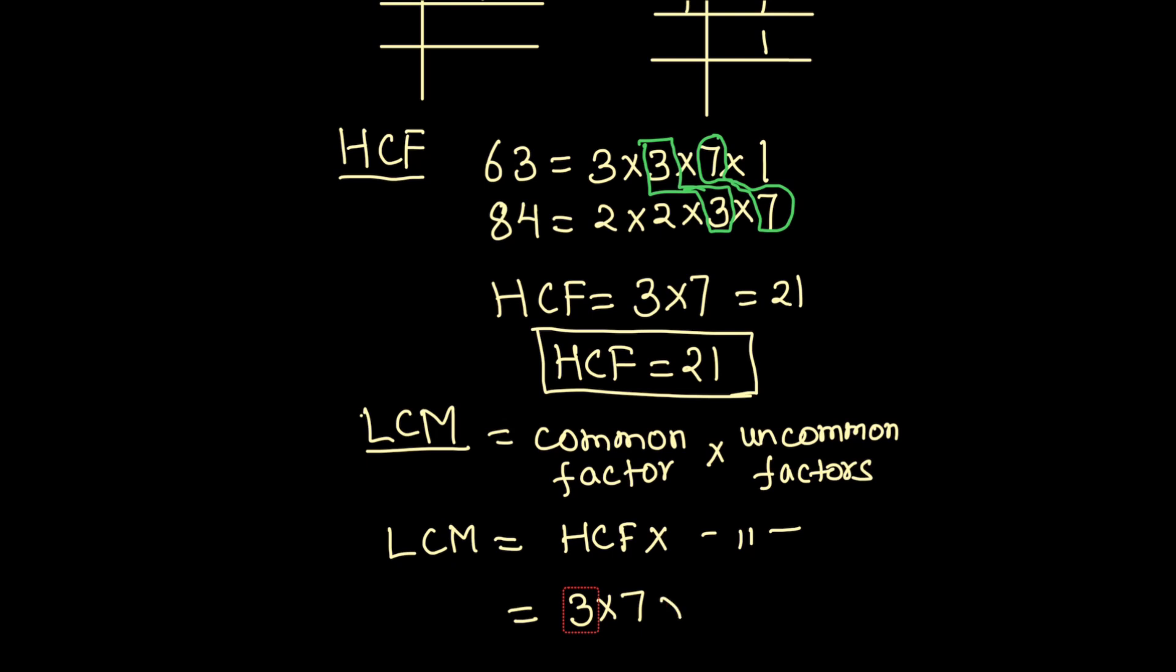These are the common factors times the rest of the factors which are not common. So from 63 we have 3 and from 84 we have 2 times 2.